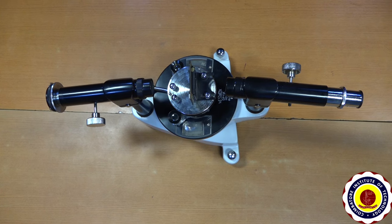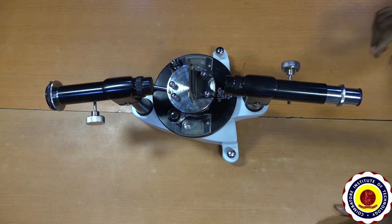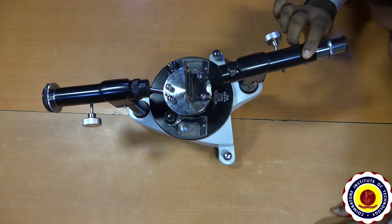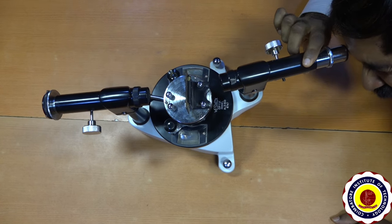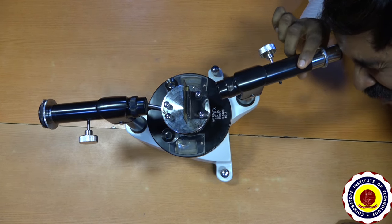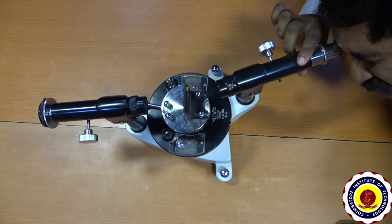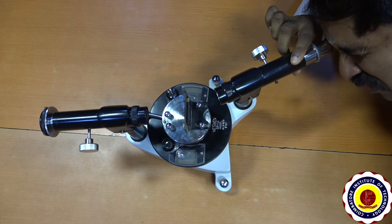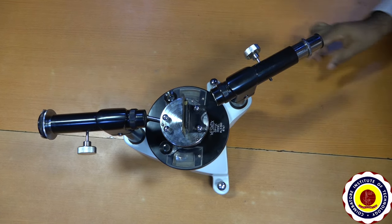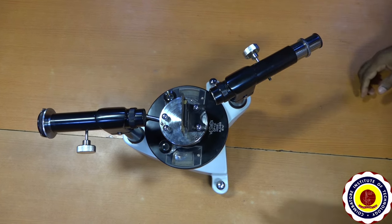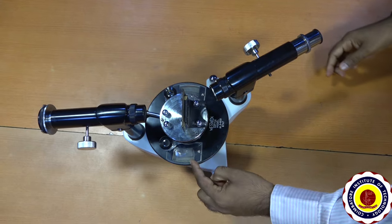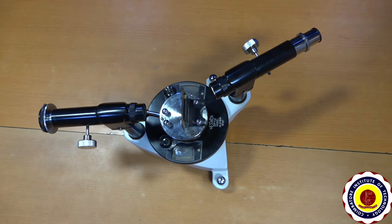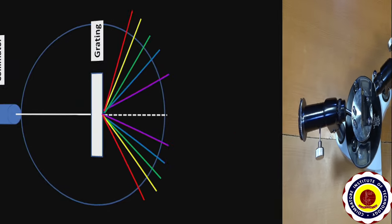Also, move the telescope over the right side of the direct image and place it over violet, blue, green, yellow, and red, and note down the corresponding readings of vernier A and vernier B in the tabulation.